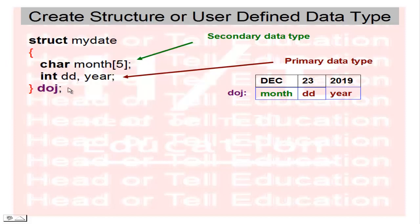If I create a variable of structure, we use it like this: assign month the value December, date 23, and year 2019. This is the structure.